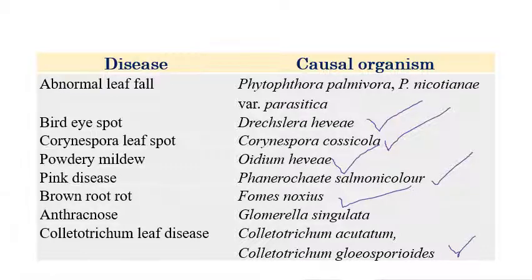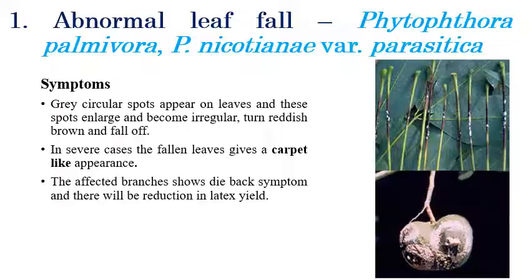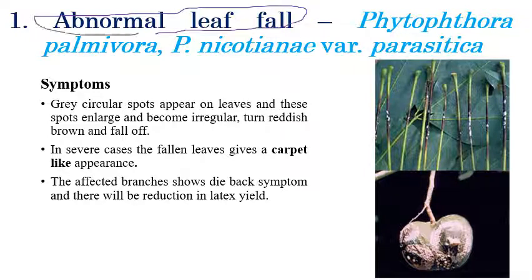Now we will see each disease in detail. The first is Abnormal Leaf Fall, caused by two species of Phytophthora: Phytophthora palmivora and Phytophthora nicotianae var. parasitica. The name itself indicates that leaves fall abnormally. Initially, gray color spots appear on the rubber leaves.